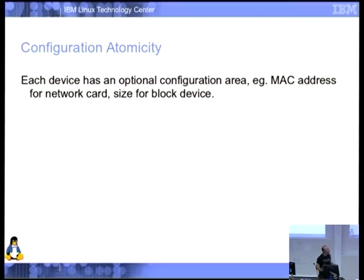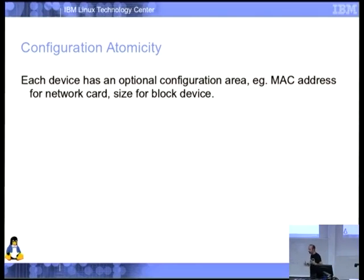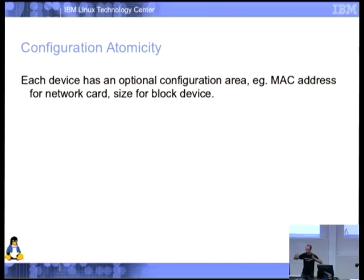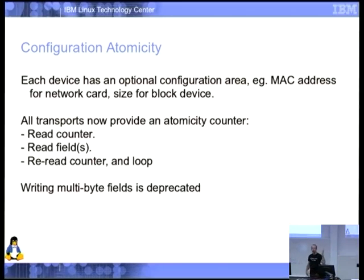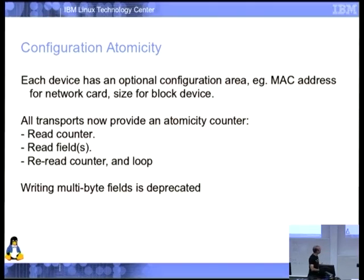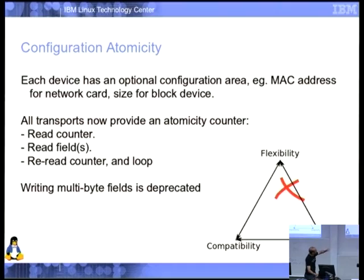Configuration atomicity: we have a configuration area — for a network card that's where you put your MAC address; for block devices, the size. The problem is if this configuration can change — like geometry information for a block device — how do you read it safely? The answer currently is 'hope it doesn't change, or try reading it twice.' Neither is robust. So every transport now provides an atomicity counter: read the counter, read the fields, read the counter again — if it changed, something was updated. With correct memory barriers, this is safe.